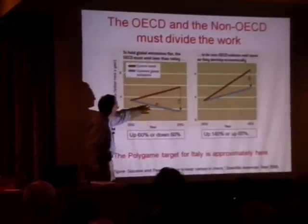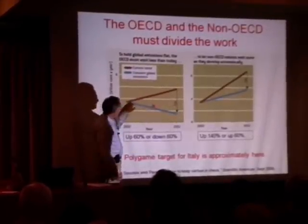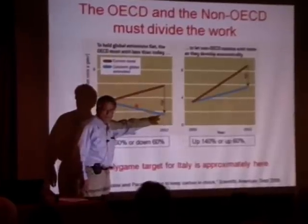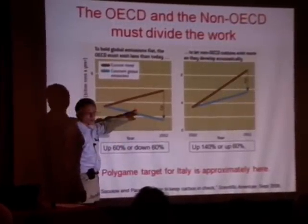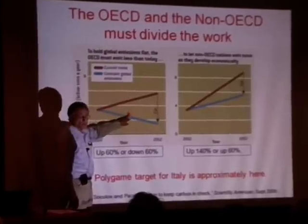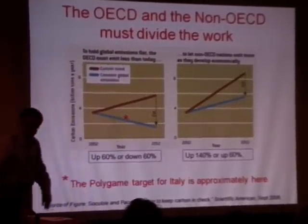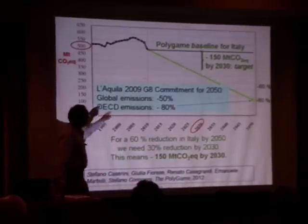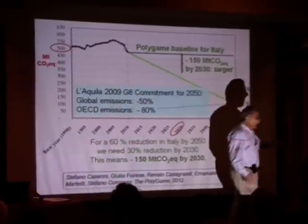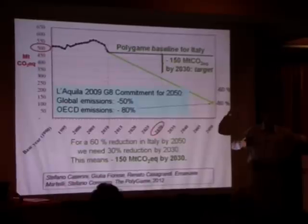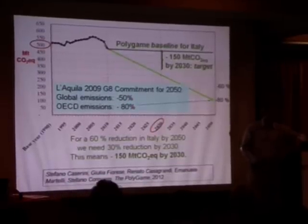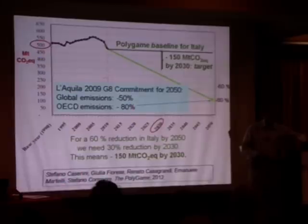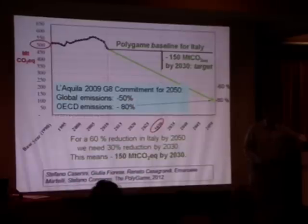Italy is following a curve approximately like this, and you're looking at 2030. Your baseline for Italy — if you do nothing special — is flat, not rising. The organizers are saying Italy's emissions will stay at approximately 500 million tons of CO2, about one and a half percent of the world total. And if you work very hard, you will meet the goal enunciated at Aquila three years ago.